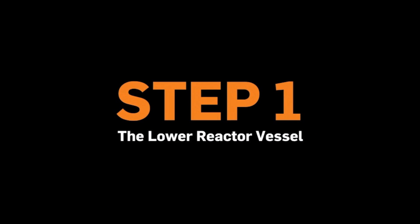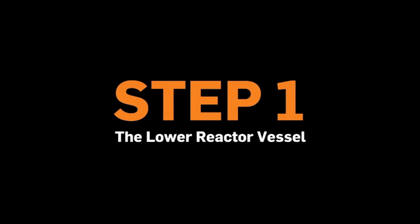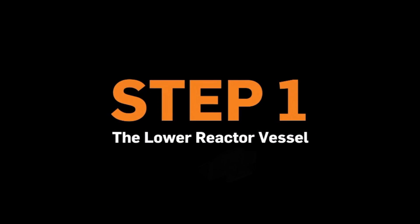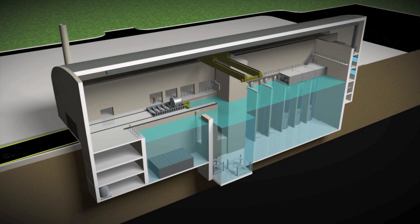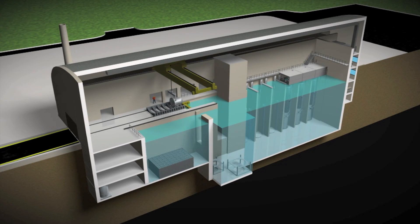Step 1: The Lower Reactor Vessel. The first section to be installed is the lower one-third of the reactor vessel, shown here on the module import trolley. It is lifted by a single failure-proof crane and carefully placed in the first module assembly stand.